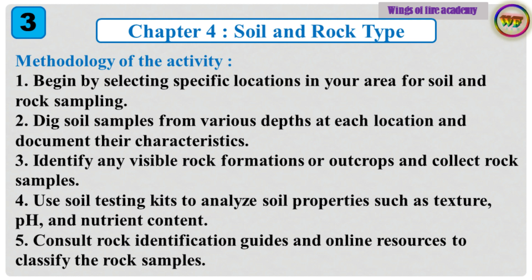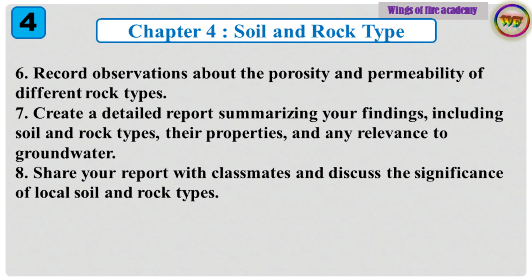5. Consult rock identification guides and online resources to classify the rock samples. 6. Record observations about the porosity and permeability of different rock types. 7. Create a detailed report summarizing your findings, including soil and rock types, their properties, and any relevance to groundwater. 8. Share your report with classmates and discuss the significance of local soil and rock types.